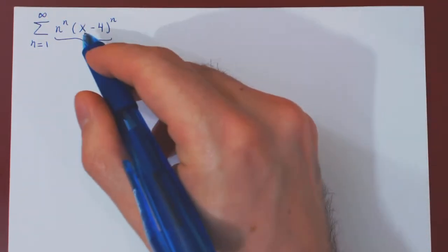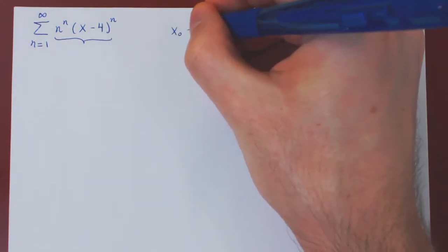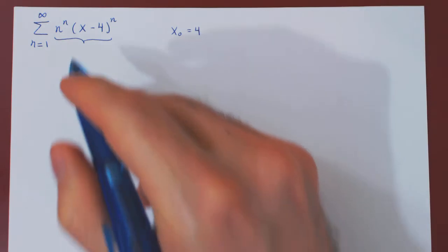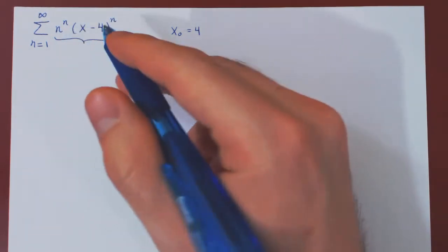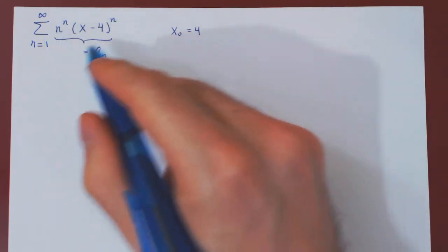Two things, clearly here the center of the series is 4. And we're summing the terms of this sequence, so this is a_n. And when we deal with a power series, we can always apply the ratio or the root test.